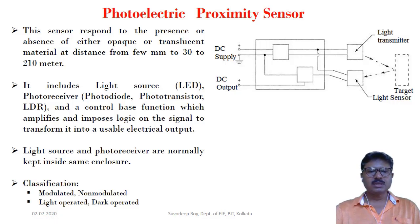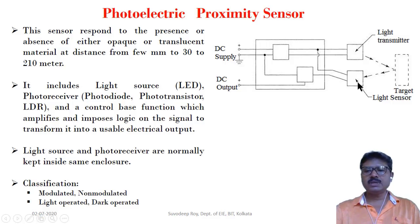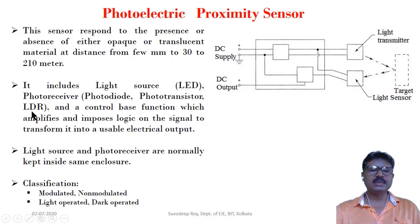The light source is normally an LED. The receiver is normally a photo diode, photo transistor, or LDR — light dependent resistor.